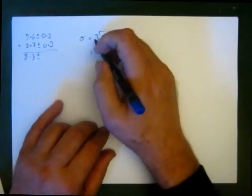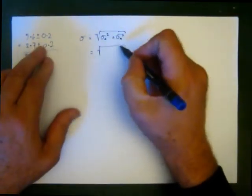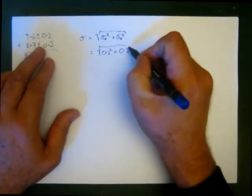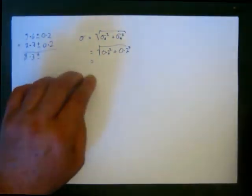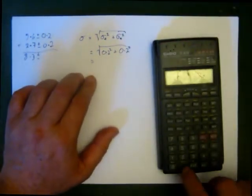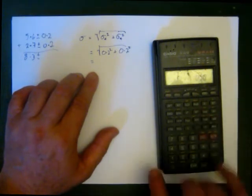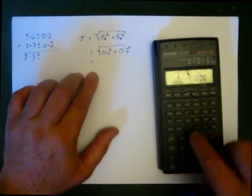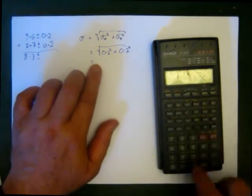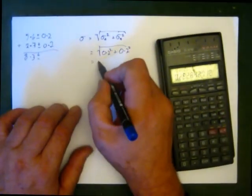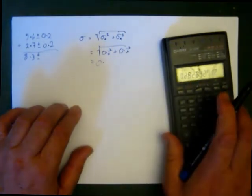So what we do is in this case we go square root of 0.2 squared plus 0.2 squared equals—at this point we'll grab our calculator—0.2 squared plus 0.2 squared equals 0.8. We take the square root of the answer, equals 0.282828.